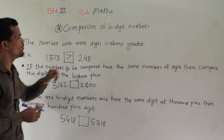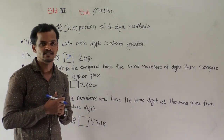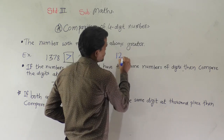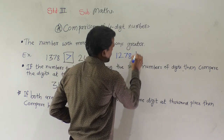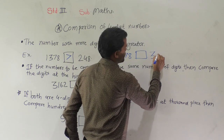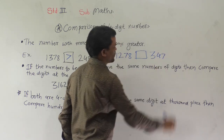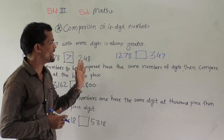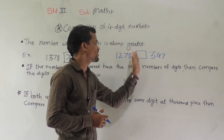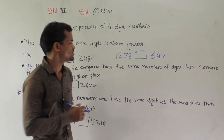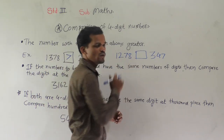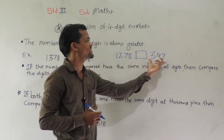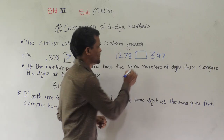A 4-digit number is always greater than a 3-digit number. One more example: 1,278 and another number is 347. We have to compare these two numbers. The number which has more digits is big — here 1, 2, 3, and 4 digits versus 1, 2, and 3 digits. So this 4-digit number is always greater than the 3-digit number.